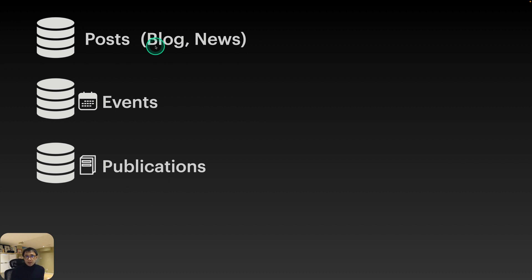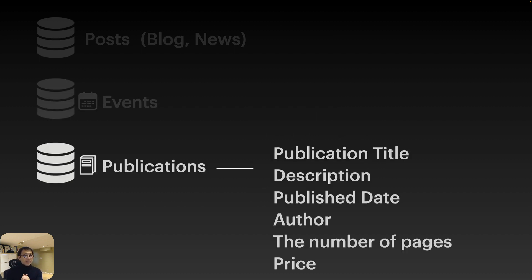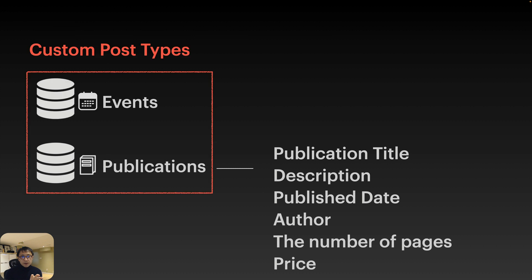In addition to default posts, you might want to create events and publications as separate post types. For events, you need more than just a title and description — you need date, time, location, and organizers. For publications, you need a title, description, publish date, author, number of pages, and price.